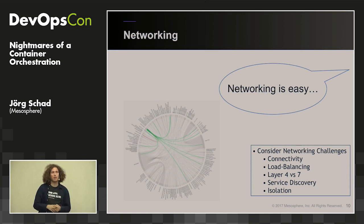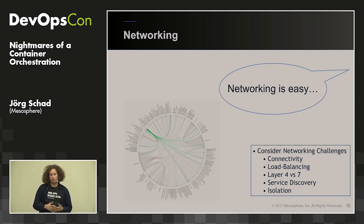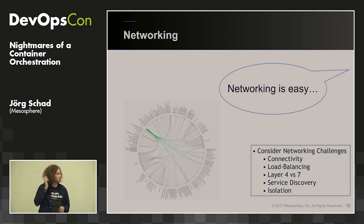Services need to be able to talk to each other. Load balancing is needed because you usually have multiple backends and need a mechanism between them. Service discovery answers the question: how can a service find another service without knowing which physical host it's running on?